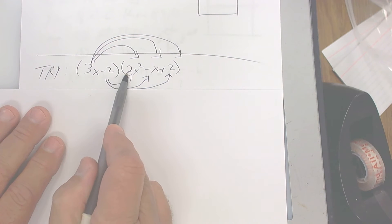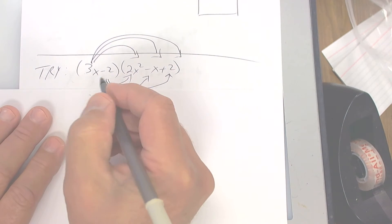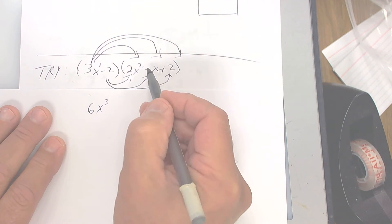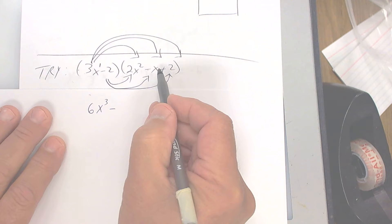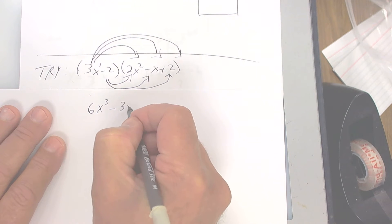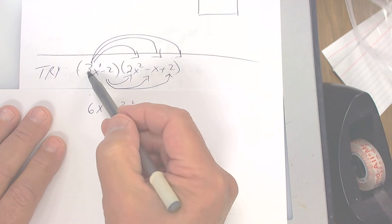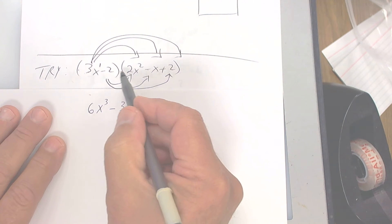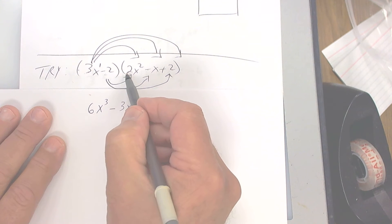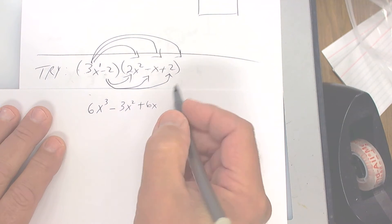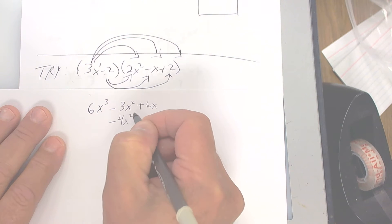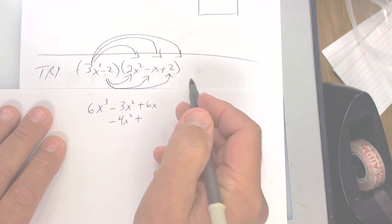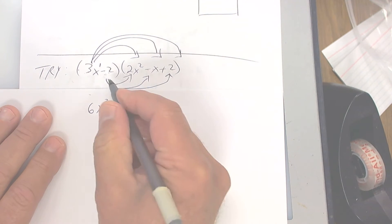All right, let's do it. Three times two is six; x¹ times x² is x³. Positive times a negative is a negative; x times x is x squared, so it's going to be negative three x squared. This times this is going to be a positive six x. Now I'm going to go to the next one: negative two times two is going to be a negative four x squared — line it up with the x squared term.